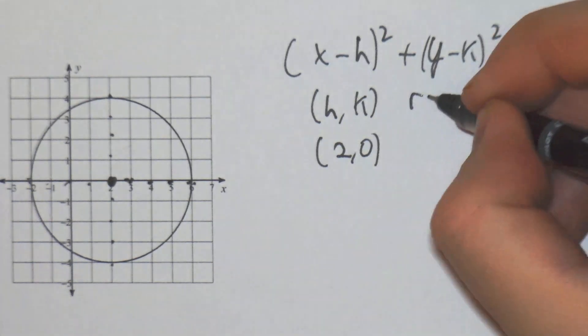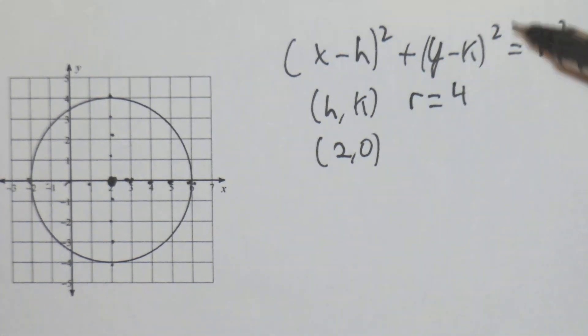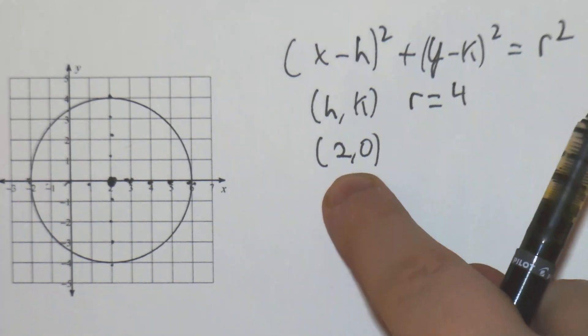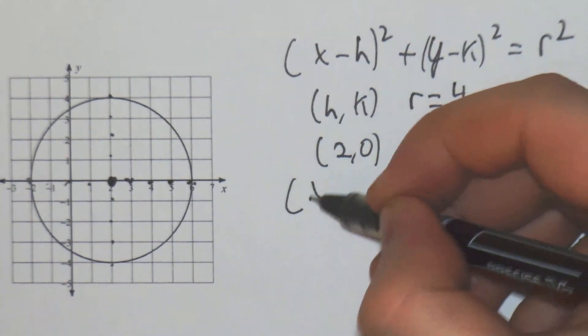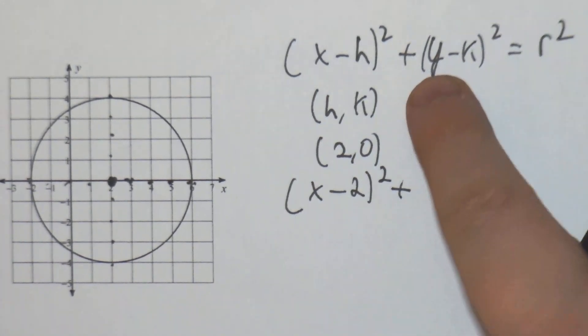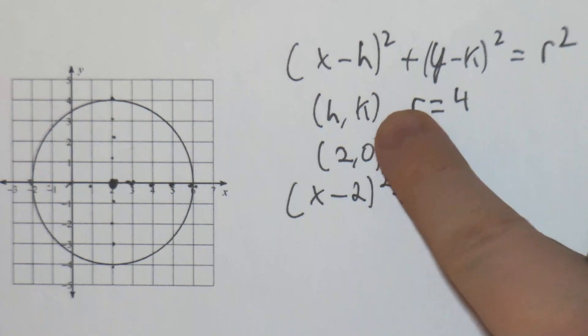So our radius equals 4. If we plug this into the formula, we get (x - 2)² plus y minus k, where k is 0. Since k doesn't mean anything here, it's just going to be y² equals r², which is 4.